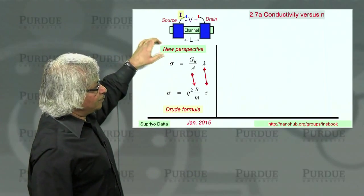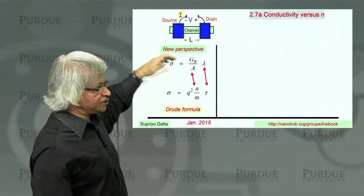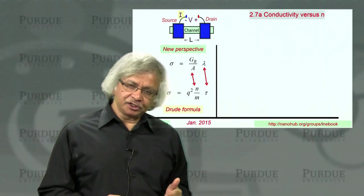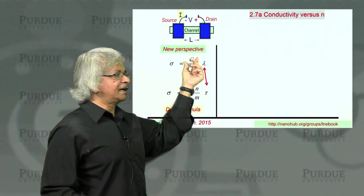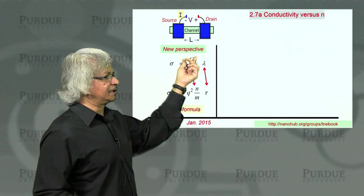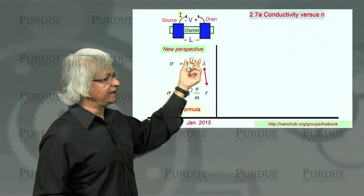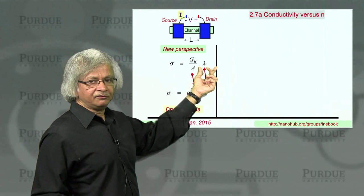Now as you know, here we have been talking about this expression for conductivity, this new perspective in which the ballistic conductance kind of plays a central role. It's like the starting point. You start from ballistic conductors, and then you obtain an expression for conductivity that's like ballistic conductance times mean-free path.